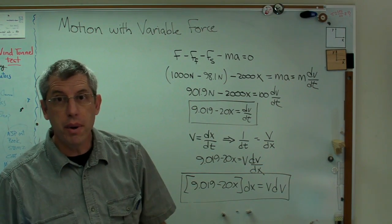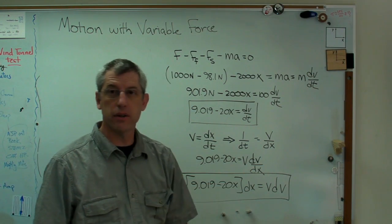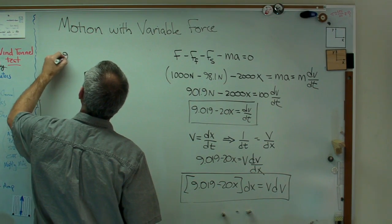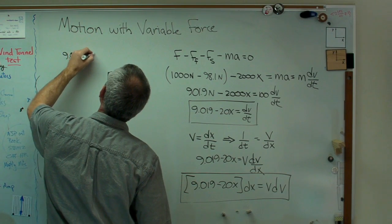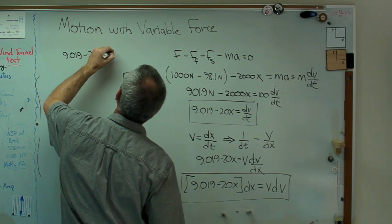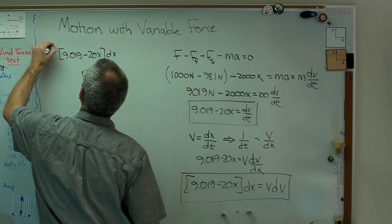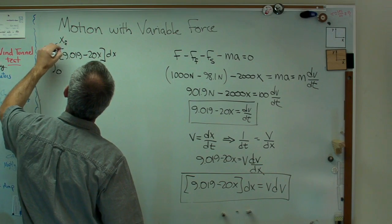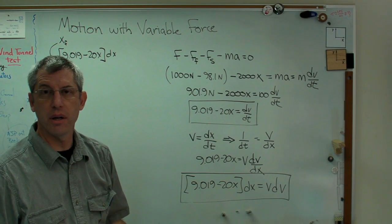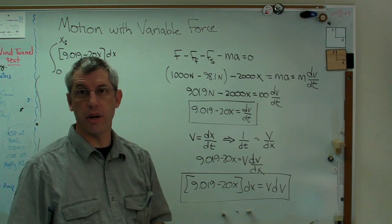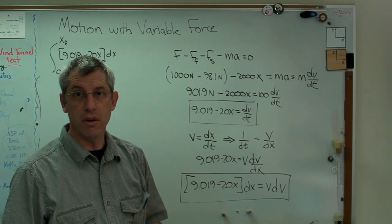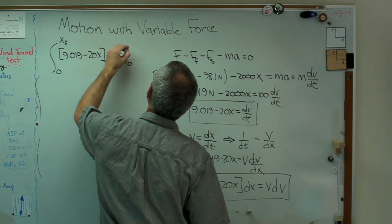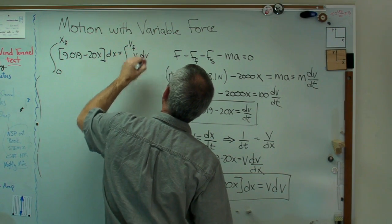Well, how do you make a dv or a dx go away? You integrate. Let's do that. We can do that. So if I say 9.019 minus 20x dx. I'm going to integrate from 0 because I'm starting at x equals 0. Whatever x final is, I don't know what it is. I'm just going to put a variable in there and I'll plug a number in later. I'm going to throw in a variable wherever you need a number but you don't have one yet.